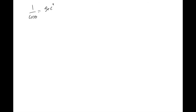We're going to use the following identities: one over cosine squared is secant squared — that is, (1/cos θ) = sec θ. And then secant squared equals one plus tangent squared of theta.